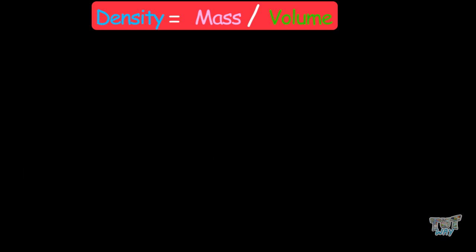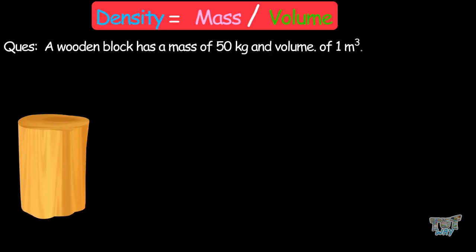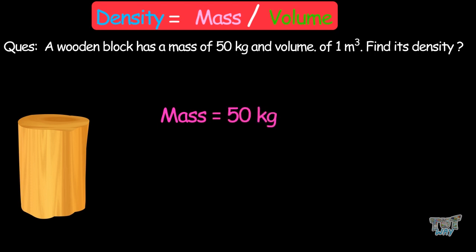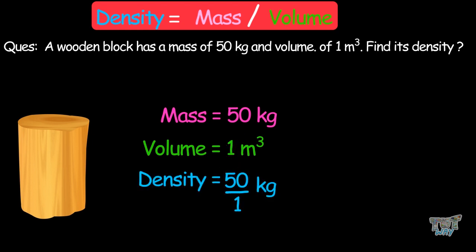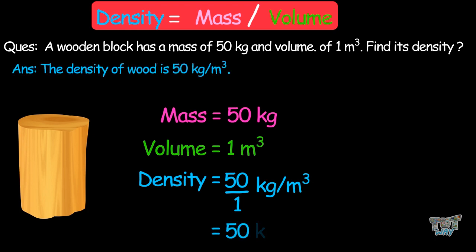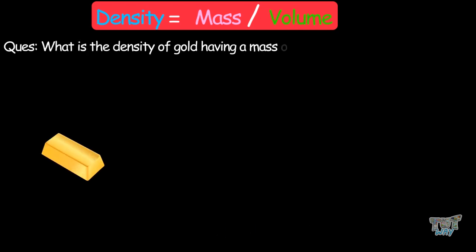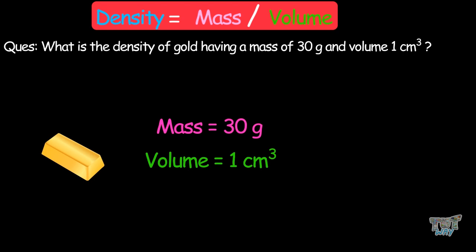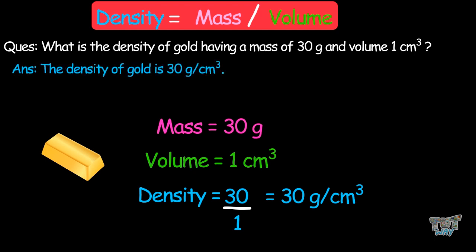Here are two more examples. A wooden block has a mass of 50 kilograms and a volume of 1 cubic meter. Density equals 50 divided by 1, so the density is 50 kilograms per cubic meter. Next, the density of gold with a mass of 30 grams and a volume of 1 cubic centimeter: density equals 30 divided by 1, so the density is 30 grams per cubic centimeter.